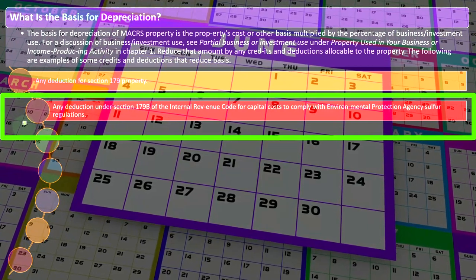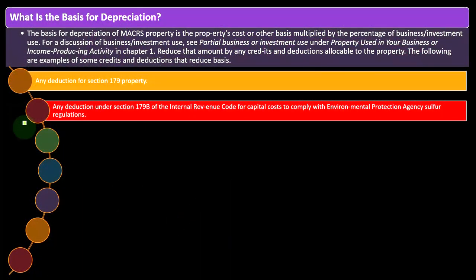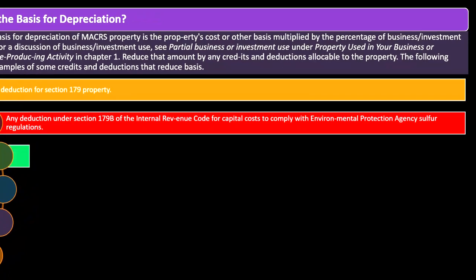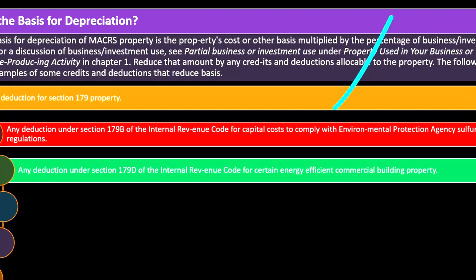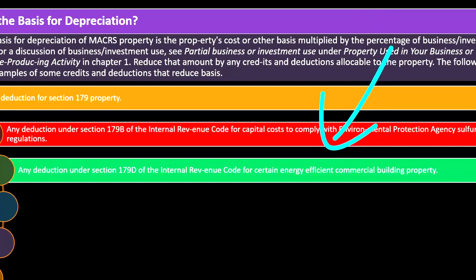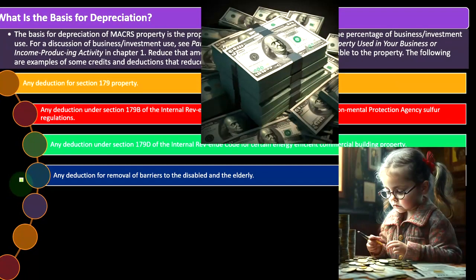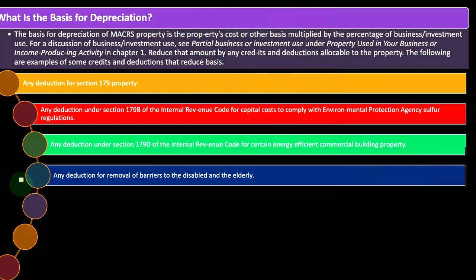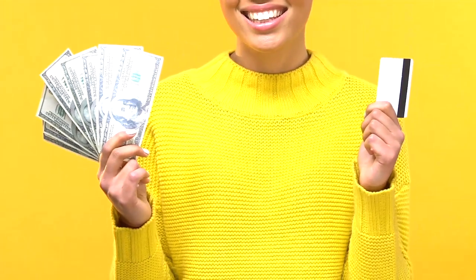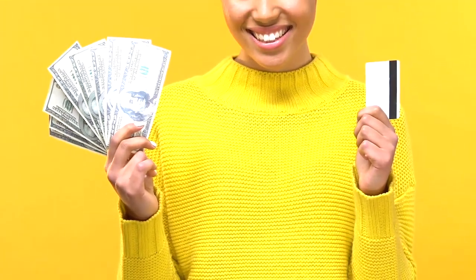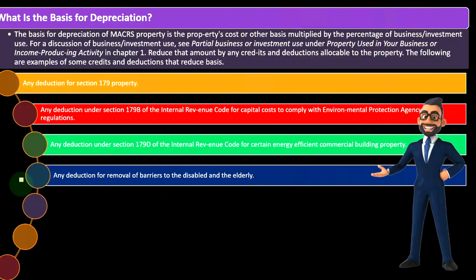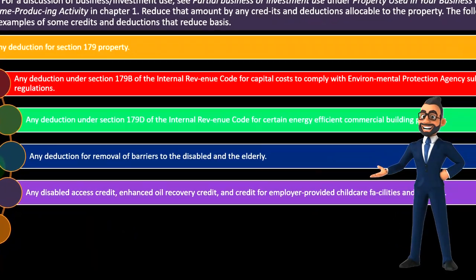Other deductions that reduce basis include: a deduction under Section 179(b) of the Internal Revenue Code for capital costs to comply with EPA sulfur regulations; a deduction under Section 179(d) for certain energy-efficient commercial building property; and any deduction for removal of barriers to the disabled and the elderly. That last one is listed here because if you received a credit for doing it, you've already gotten a benefit — taking the expense too would essentially be double dipping.